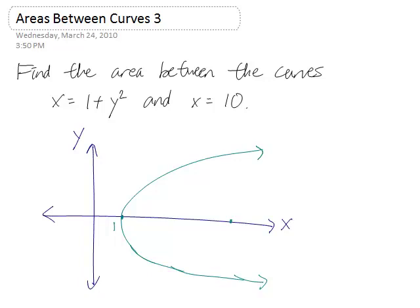And then we also have x equals 10. That's much easier. That's a vertical line at 10. And this is the area between these two curves.